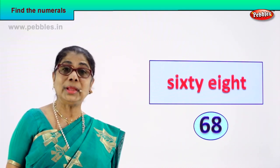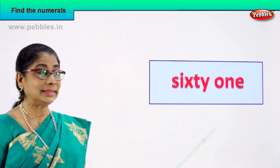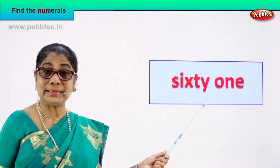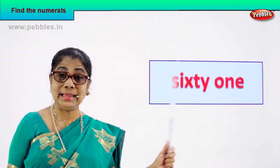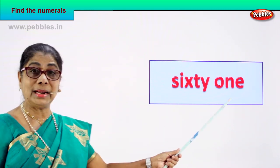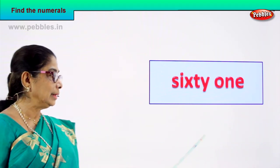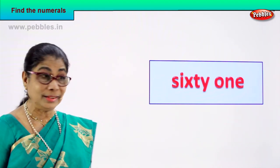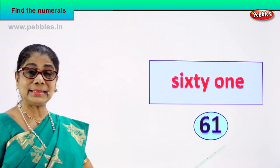Shall we take some more? Yes. Let's take the next number name. Spell and say it together: S-I-X-T-Y, sixty, O-N-E, one — 61. How do you write the numeral for this number name? 61 is written as 6 and 1. 61. 6 and 1. You write it as 61. Good.